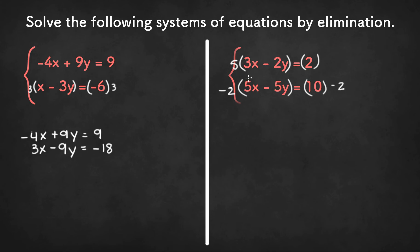So if we do that we get 5 times 3x or 15x, 5 times negative 2y or negative 10y, and 5 times 2 or 10.